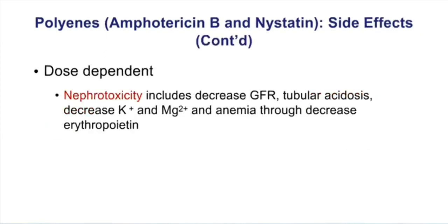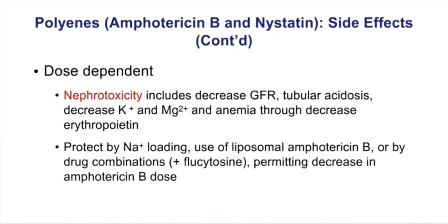Amphotericin B toxicity most often manifests as nephrotoxicity, including decreased GFR, tubular acidosis, decreased potassium and magnesium, and anemia through decreased erythropoietin. To protect against nephrotoxic effects we use sodium loading, liposomal encapsulated Amphotericin B, or drug combinations — most commonly with flucytosine — to lower the dose and reduce the risk of nephrotoxicity. This is clearly why the drug has earned the nickname 'Amphoterrible.'